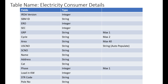I'm going to create some fields based on what's in my electricity bill. The fields include: IRDA version as integer, SBM ID as string, ERO as integer, SEC as integer, GRP as string. These are all auto-populating because when a consumer registers in their organization — like a Northern Power Distribution organization — these fundamentals are already stored in their account.